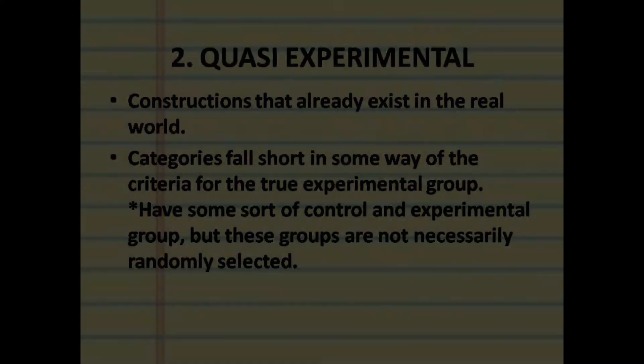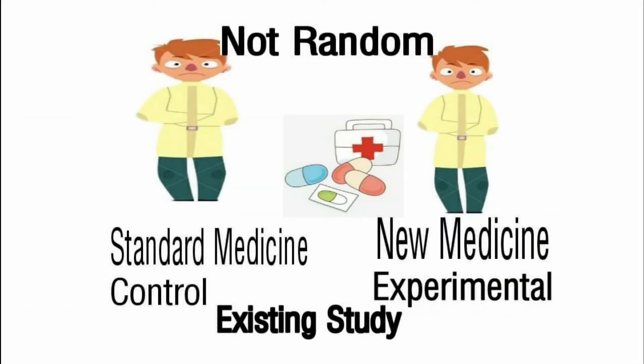The sample is the same — standard medicine as control and new medicine as experimental — but in this case, it is not random. This means the doctor may have just assigned participants to the research. Sometimes it uses existing studies, and the quasi-experimental is there to explain what the result of the true experimental was.